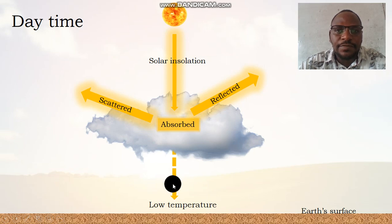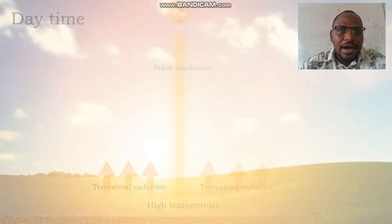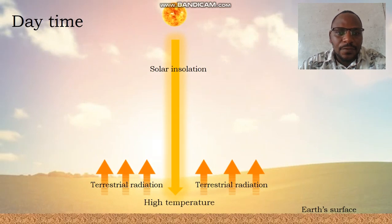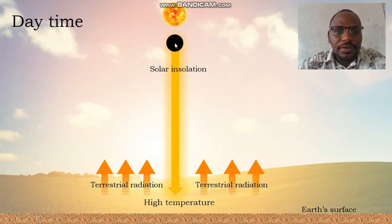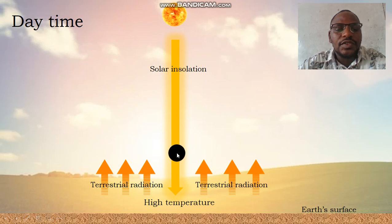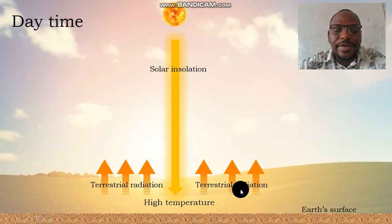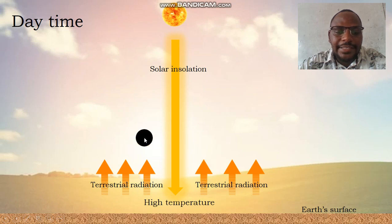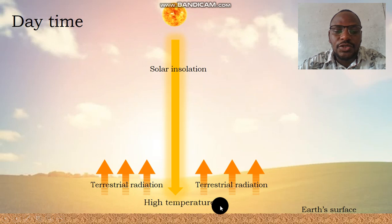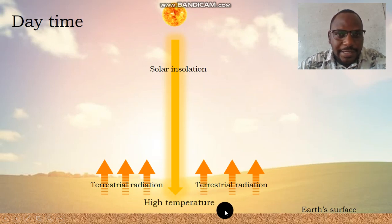This is during the day. Again, during the day where there are no clouds, all the heat energy from the Sun through solar insolation moves down to the surface of the Earth, heats the ground, and the ground starts to emit terrestrial radiations. These radiations will heat the air above the Earth's surface and this will lead to high temperatures during the day when there are no clouds.